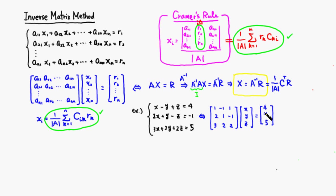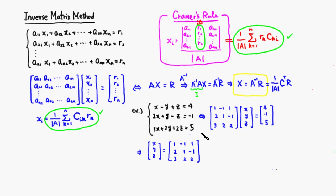To find x, y, z, we need to find the inverse of the coefficient matrix A = [1, −1, 1; 2, 1, −1; 3, 2, 2], then multiply by the right-hand side. I'm going to use GeoGebra to compute the inverse matrix and the multiplication.